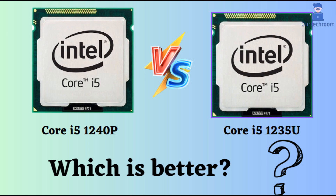In this video, a comparison between the Intel Core i3-1240p and the Intel Core i5-1235u will be presented, focusing on their variances. A conclusion will be drawn to assist you in discerning the superior option. Both processors belong to the mid-range category, stemming from the Alder Lake architecture. However, they exhibit distinct variances that render them more adept at specific tasks.